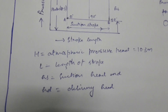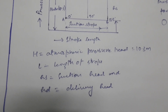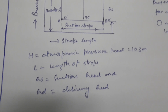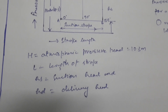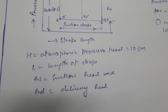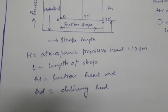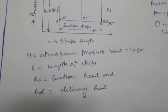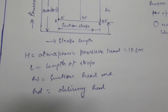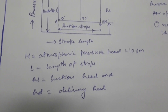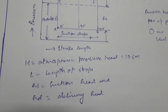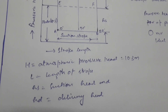Let's look at the notations: H is pressure head, L is length of stroke, HS is suction head, and HD is delivery head (pressure head).